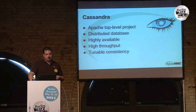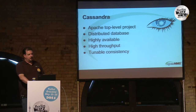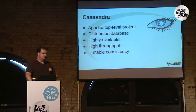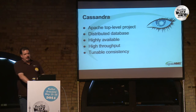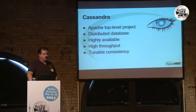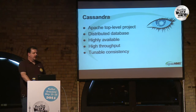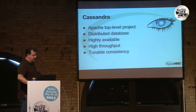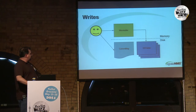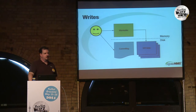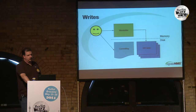From the title of the talk, it's probably no mystery that our solution to this involves Cassandra. For those of you not familiar, Cassandra is an Apache top-level project for a distributed database, one that is well known to be highly available and have high throughput. It's also known as a solution that utilizes tunable consistency. You may have heard 'eventual consistency' talking about the same thing - eventual consistency has kind of a negative connotation, but I would argue this is an important feature.